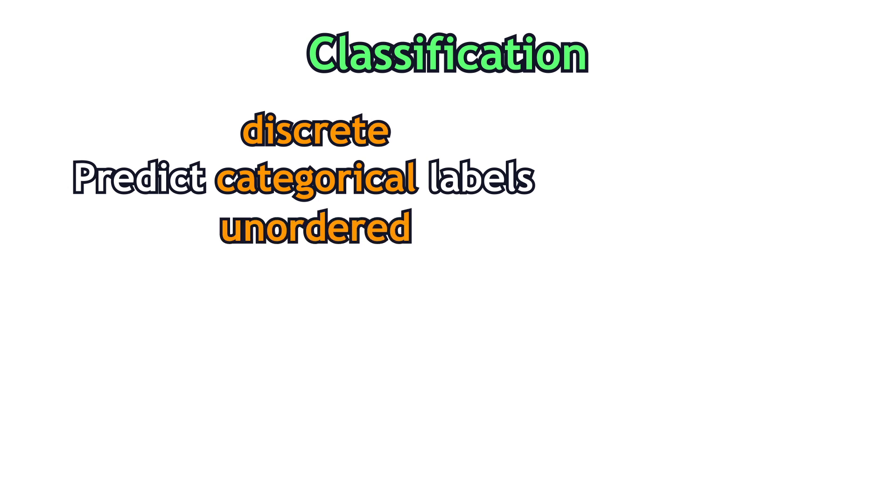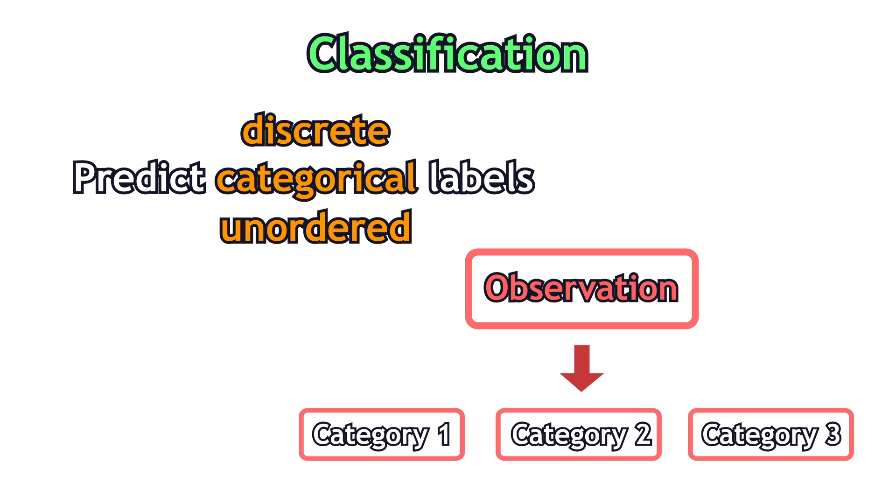Supervised learning models are divided into two categories, classification and regression. The goal of classification is to predict categorical labels, which are discrete, unordered values. In other words, classify an observation into a fixed number of categories.